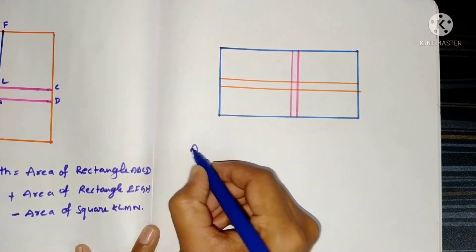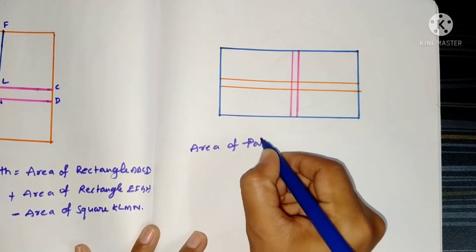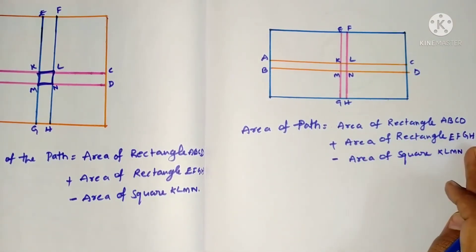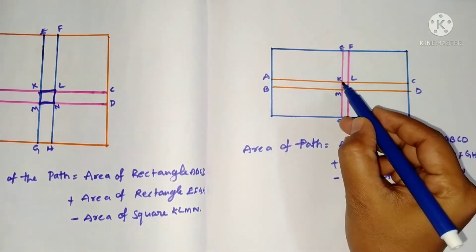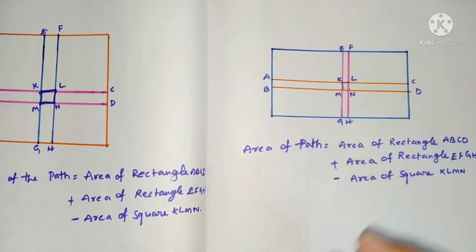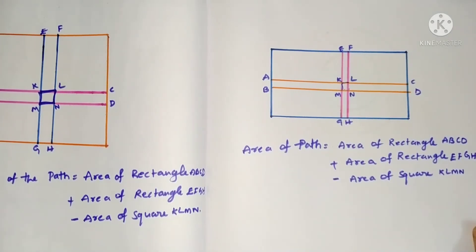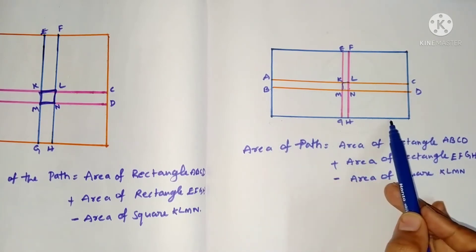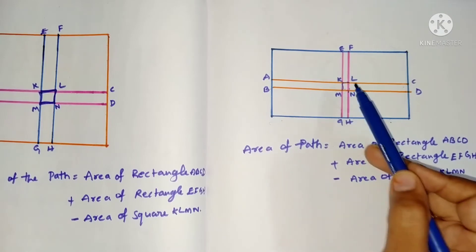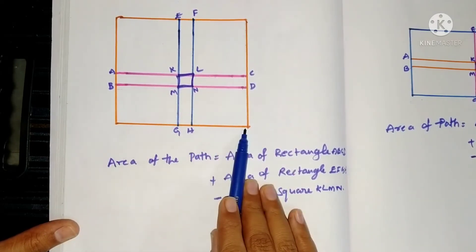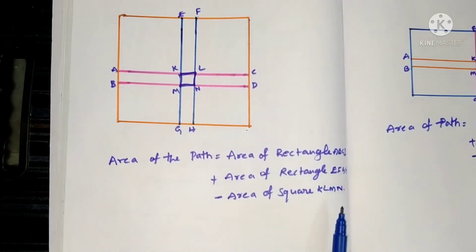Similarly for a rectangle: area of path = area of rectangle ABCD plus area of rectangle EFGH minus area of the overlapping square. We subtract the square because it is included in both rectangles and gets counted twice. The length of each rectangle is the length of the overall shape, the breadth is the width of the path, and the side of the overlapping square equals the width of the path.